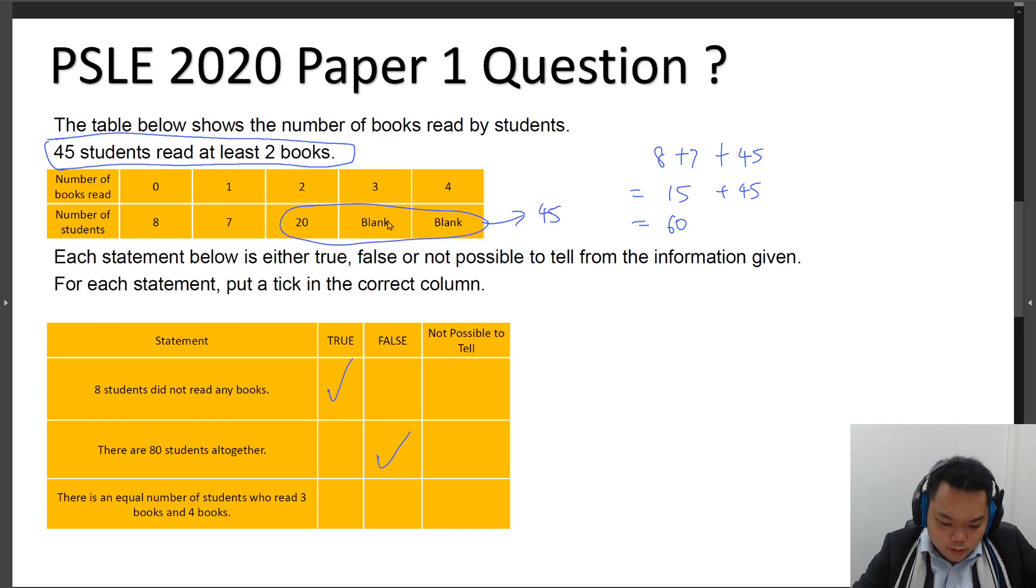This means that if we are to break it down further, the total number of students who read 3 books and 4 books would be 45 minus 20 to give you 25. So in order for you to have an equal number of students, you will see that when you try to divide this by 2, you would have 12 remainder 1. You are not able to divide it equally among these two groups over here. So we can say that this question here is categorically false.